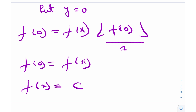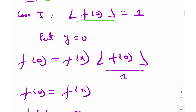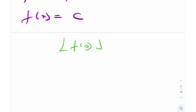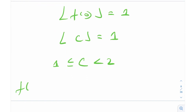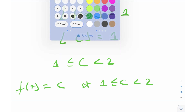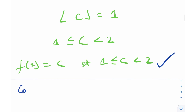f(x) is a constant function because f(0) is constant. Can we define this constant c with some nice properties? Notice that floor(f(0)) equals 1, and if f(0) equals c, then floor(c) equals 1, which means c is between 1 and 2. So we have the solution f(x) equals c, where c is in [1, 2) — that is, floor(c) equals 1. You can plug this into the functional equation and verify it works. This is the first and only solution from Case 1.